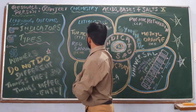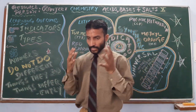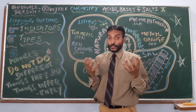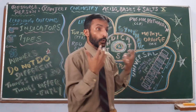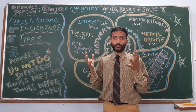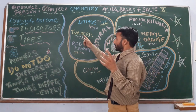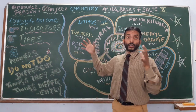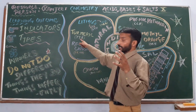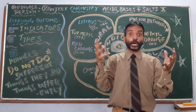There is another natural indicator: turmeric. You know it is used in our daily life to cook food, and it also has antiseptic properties. Turmeric is yellow originally. In acid it remains yellow, but in base it becomes brown.